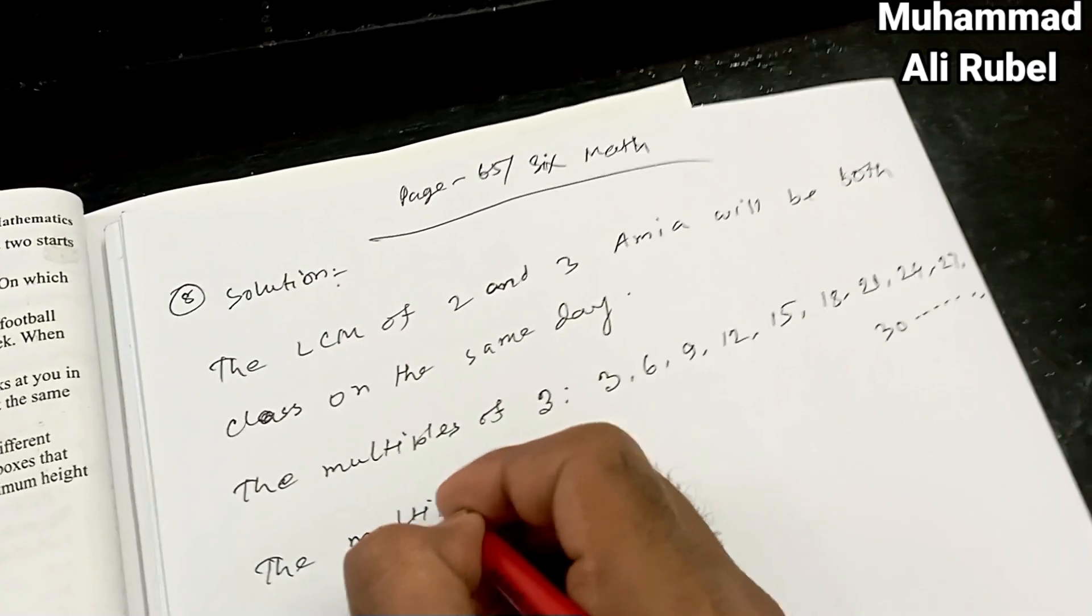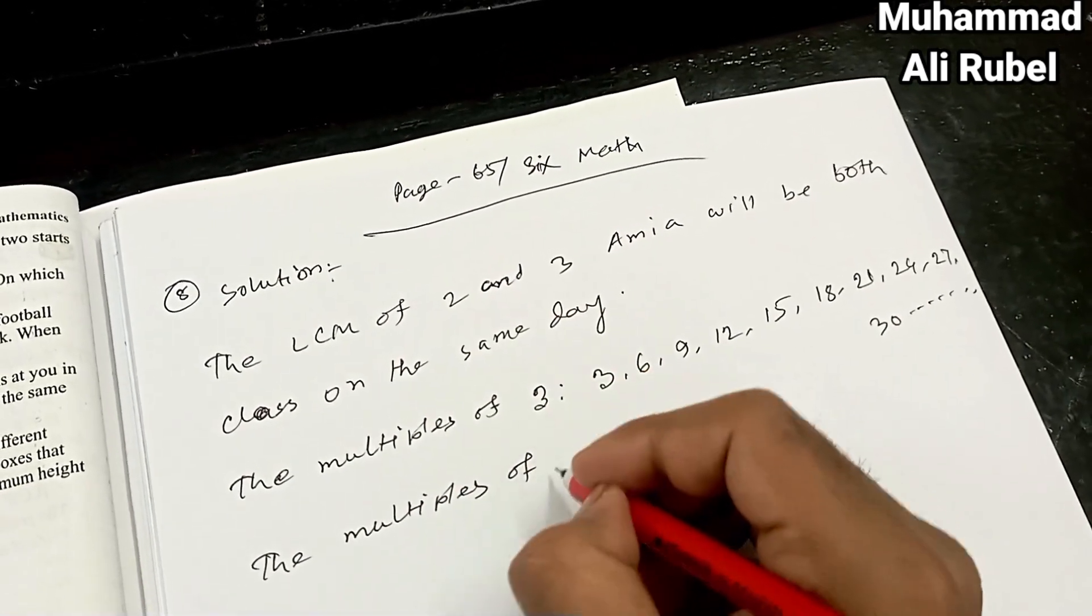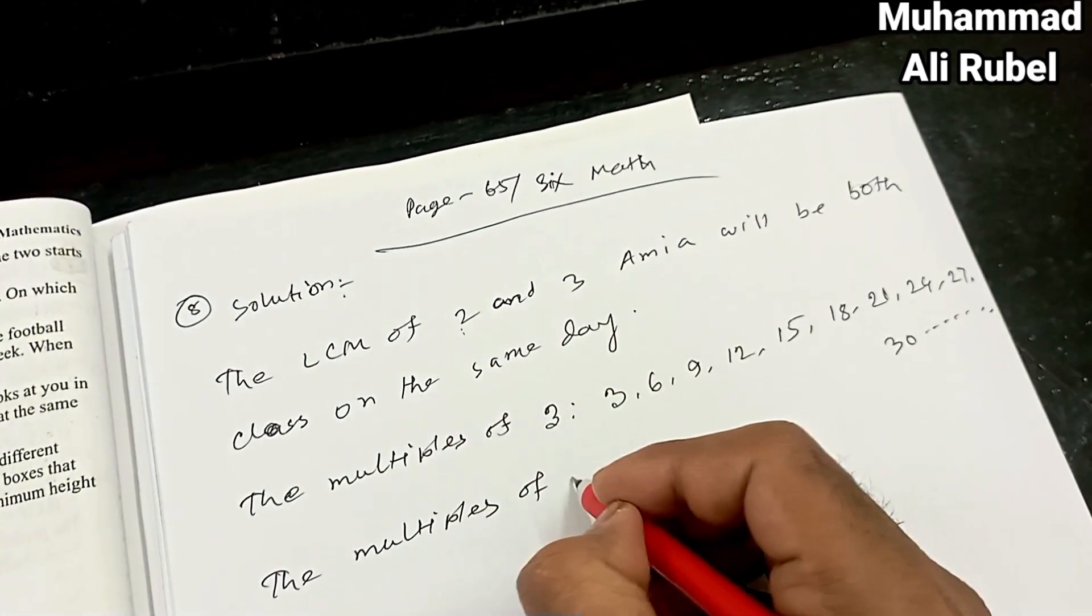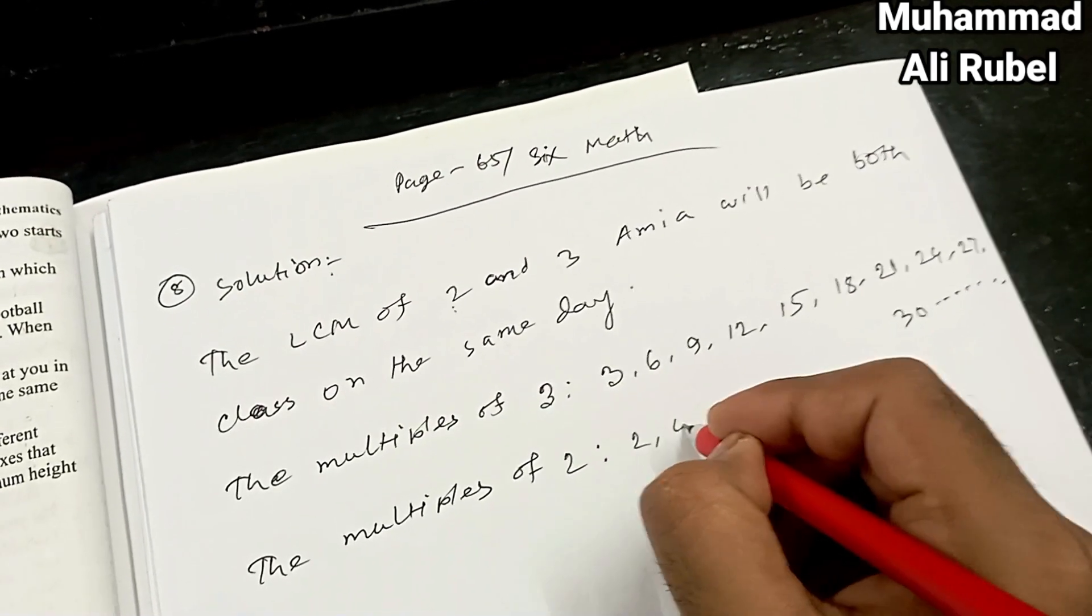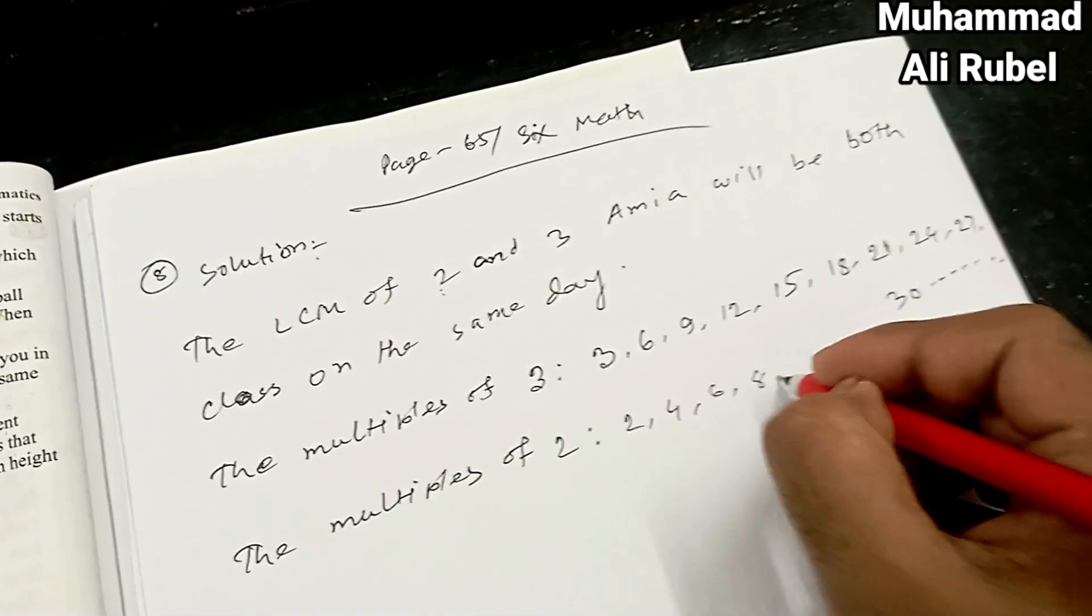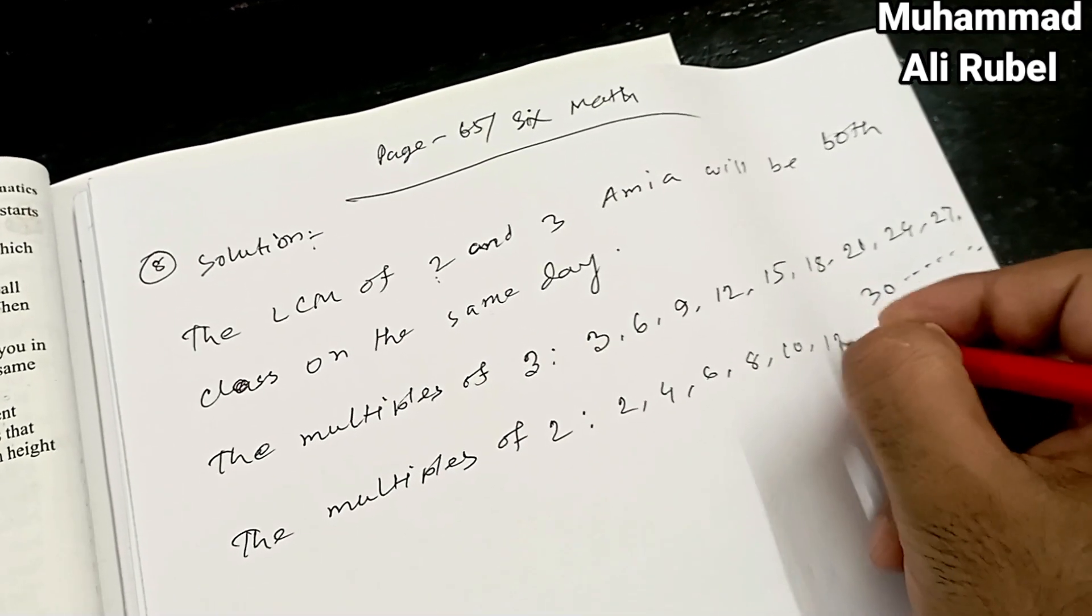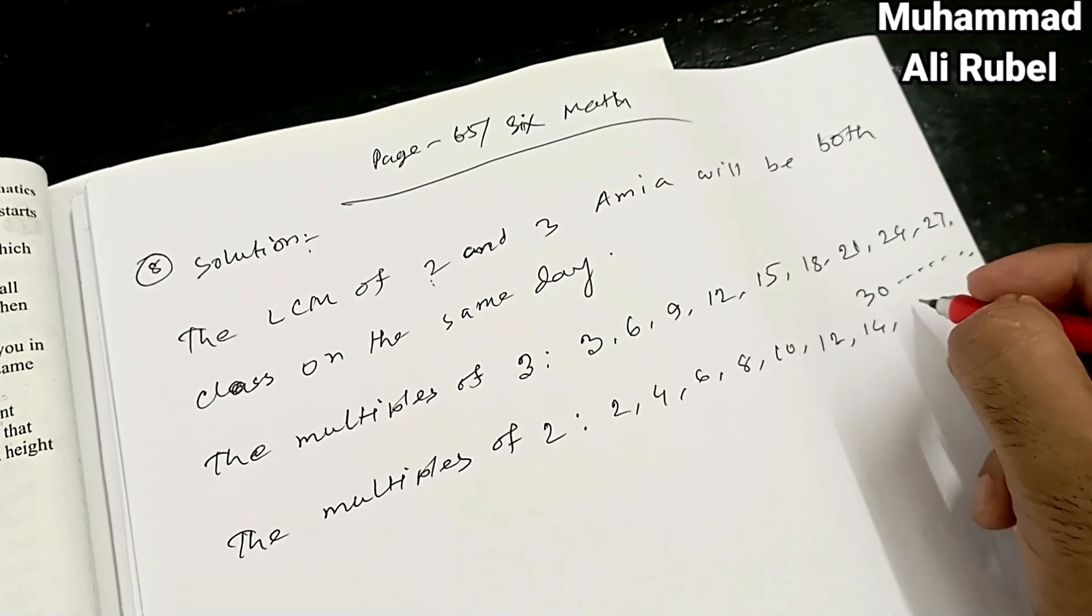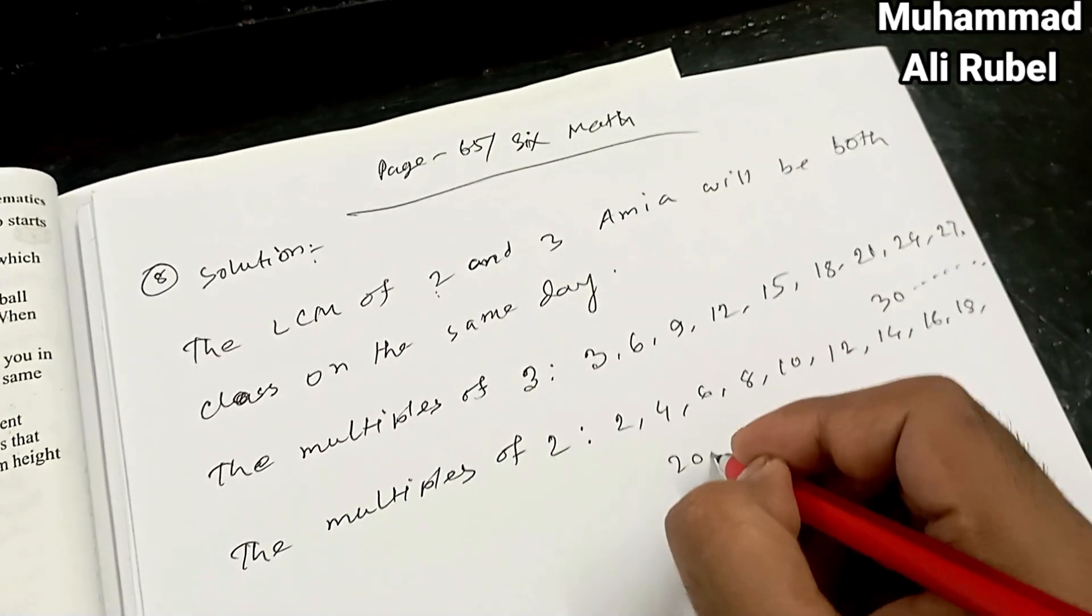The multiples of 2: 2, 4, 6, 8, 10, 12, 14, 16, 18, 20...